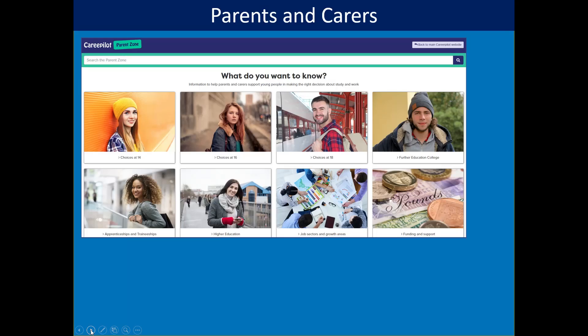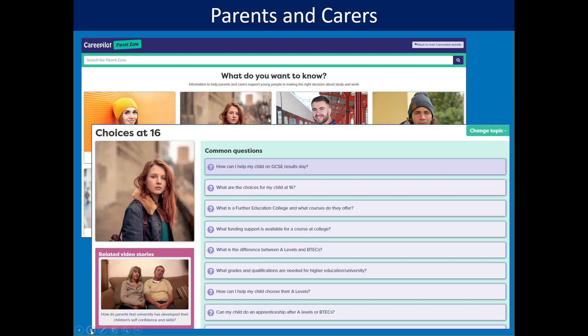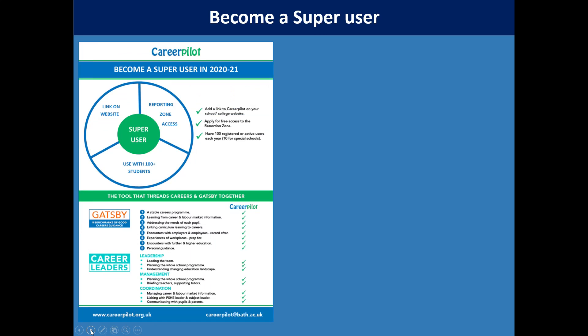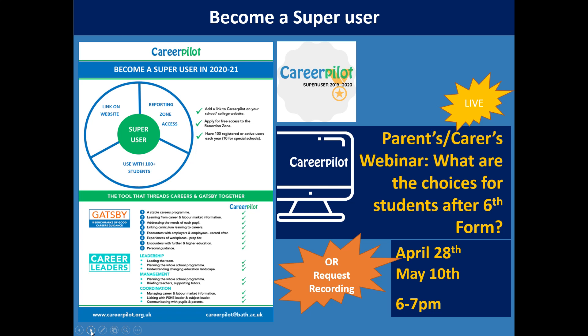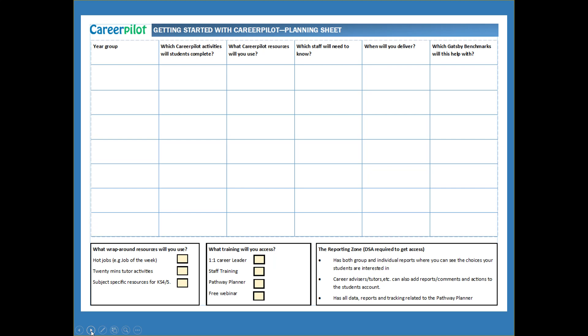There's also a parent zone — we're trying to make sure parents get the answers to questions they're often asking, and we do tell them about the main Career Pilot site because they love the main site too. They can look at questions parents often want answered, such as: under choices at 16, what is a further education college and what courses do they offer? A school can become a super user — to do that you have to meet three criteria: have a link to Career Pilot on your website, have access to the reporting zone, and have at least 100 students registered and signed in each academic year. You then get a certificate and access to other things, like live webinars for parents on choices at 16 and choices at sixth form, which have been really popular and are only offered to super user schools.